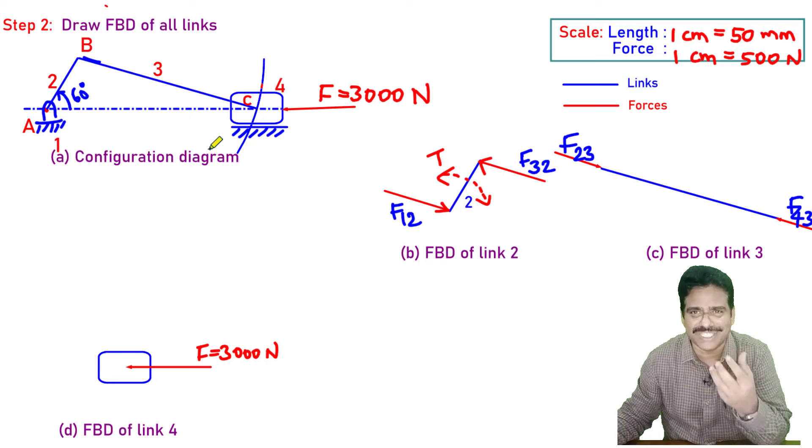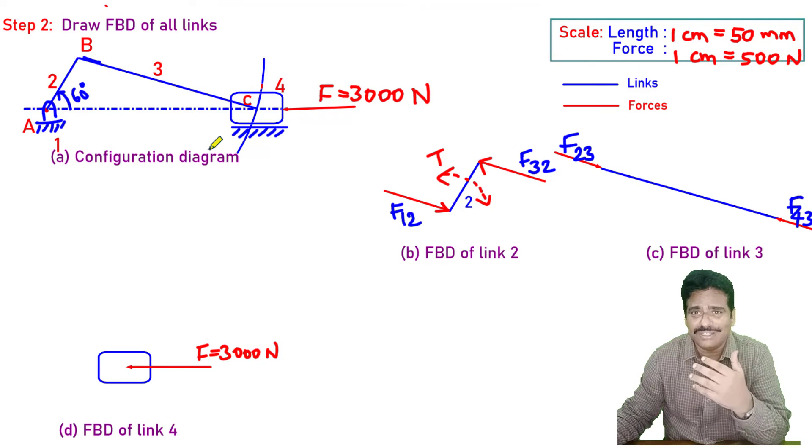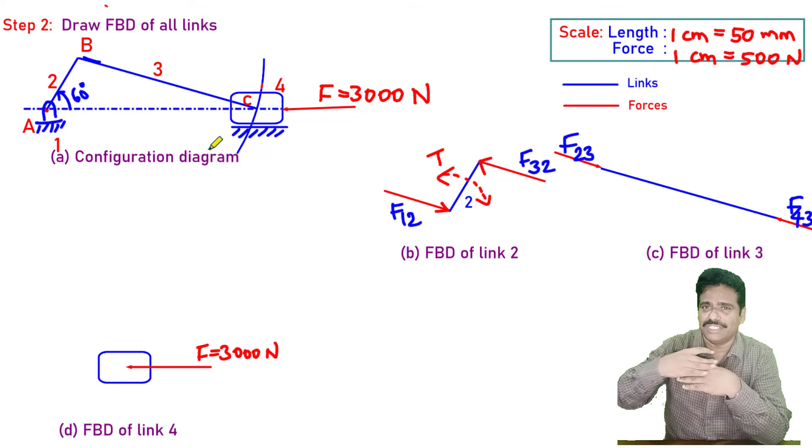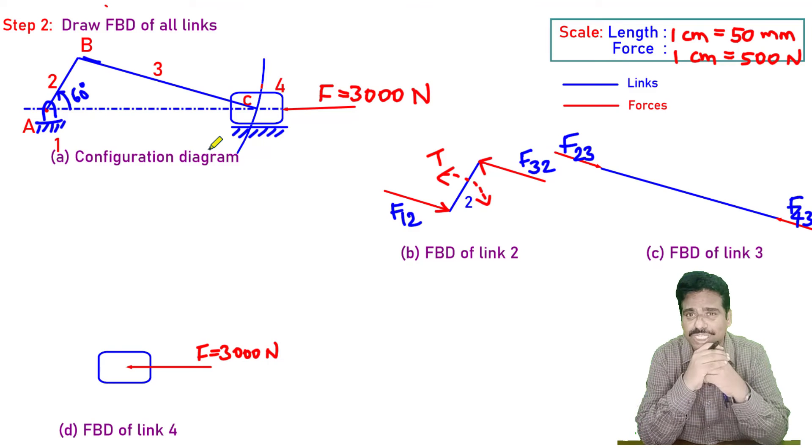The fixed link will exert some force on the slider. What is that notation? F14. What is the direction of F14? Since it's fixed, when it slides, obviously it will be acting normal to the slider.